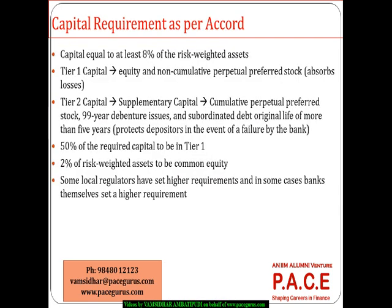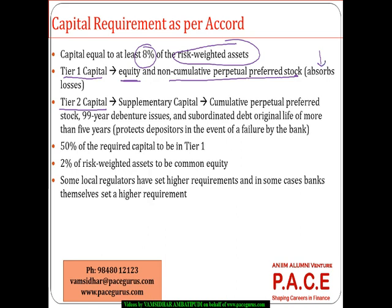Once risk-weighted assets are computed, the capital should be at least 8% of that total. Within this, there is a breakdown of Tier 1 and Tier 2 capital. Tier 1 is purely equity and non-cumulative perpetual preferred stock, as these absorb the majority of losses. There is a strict requirement that at least 2% of risk-weighted assets must be in the form of common equity, as this portion absorbs the first set of losses.